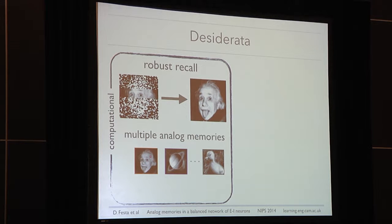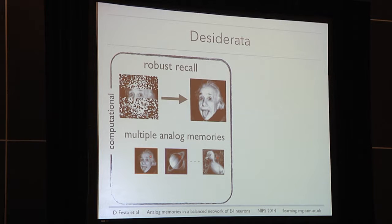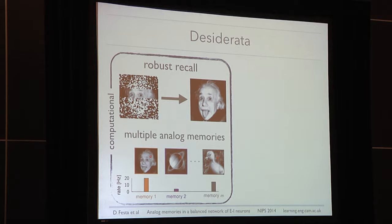To give a more practical example, imagine that a neuron is encoding the grayscale value of the little pixel shown in red. We want this neuron to express, for each memory state, a distinct firing rate.